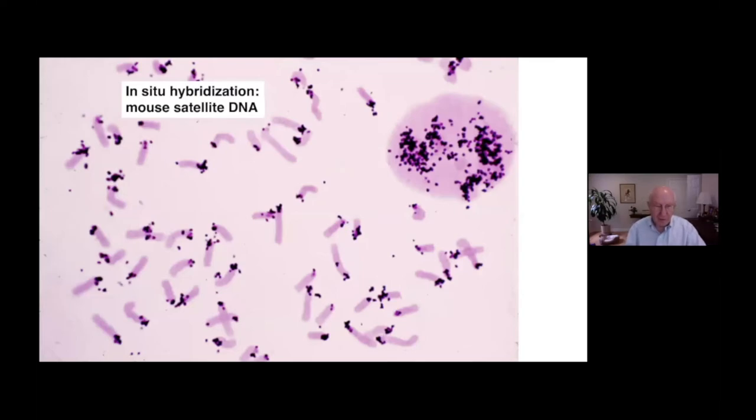When this satellite DNA was purified and used as a probe on cytological preparation, it was found to hybridize to the ends of the mouse chromosomes. Satellite DNA was found to consist of very simple sequences and essentially defines large regions of gene-free chromatin.